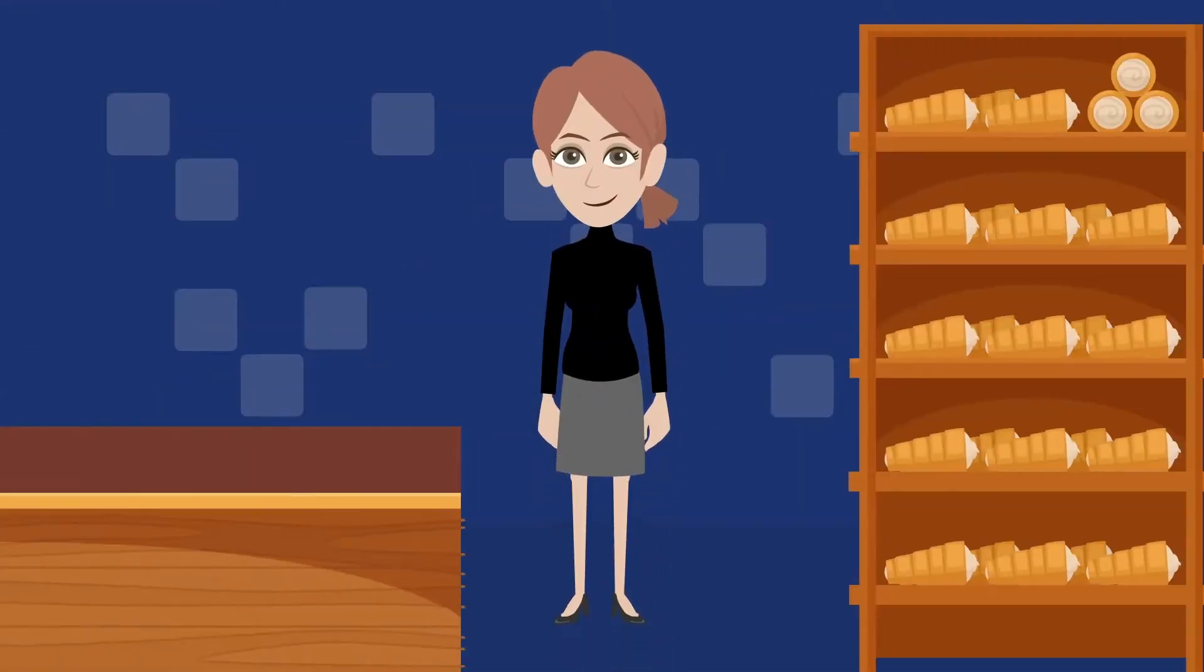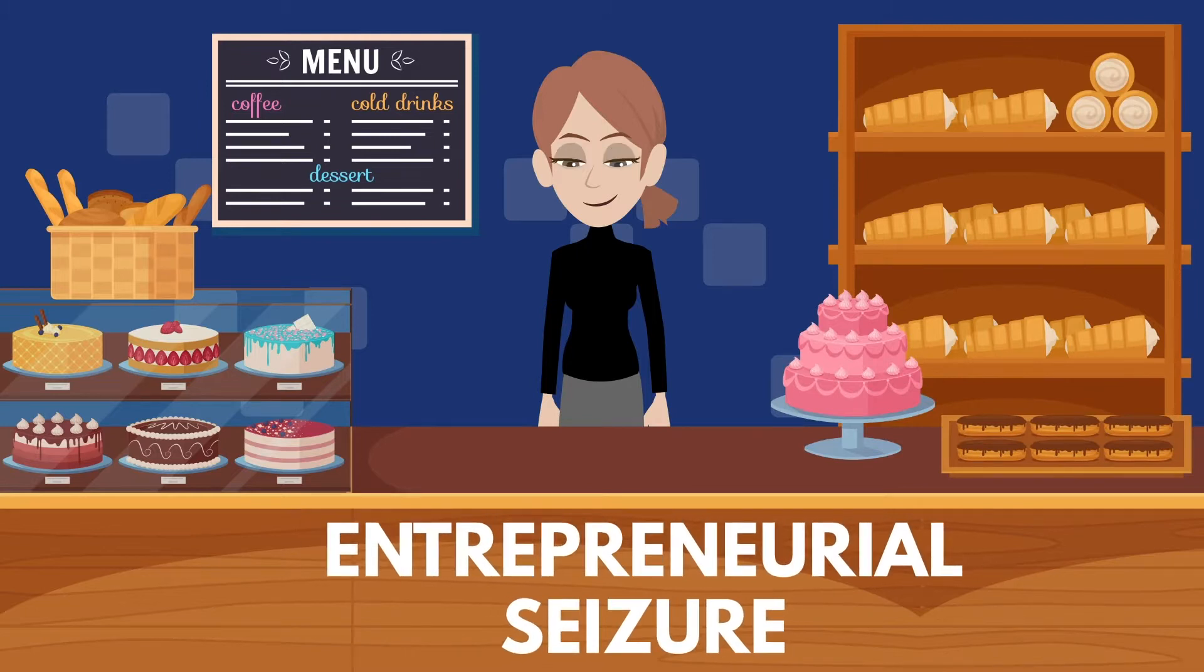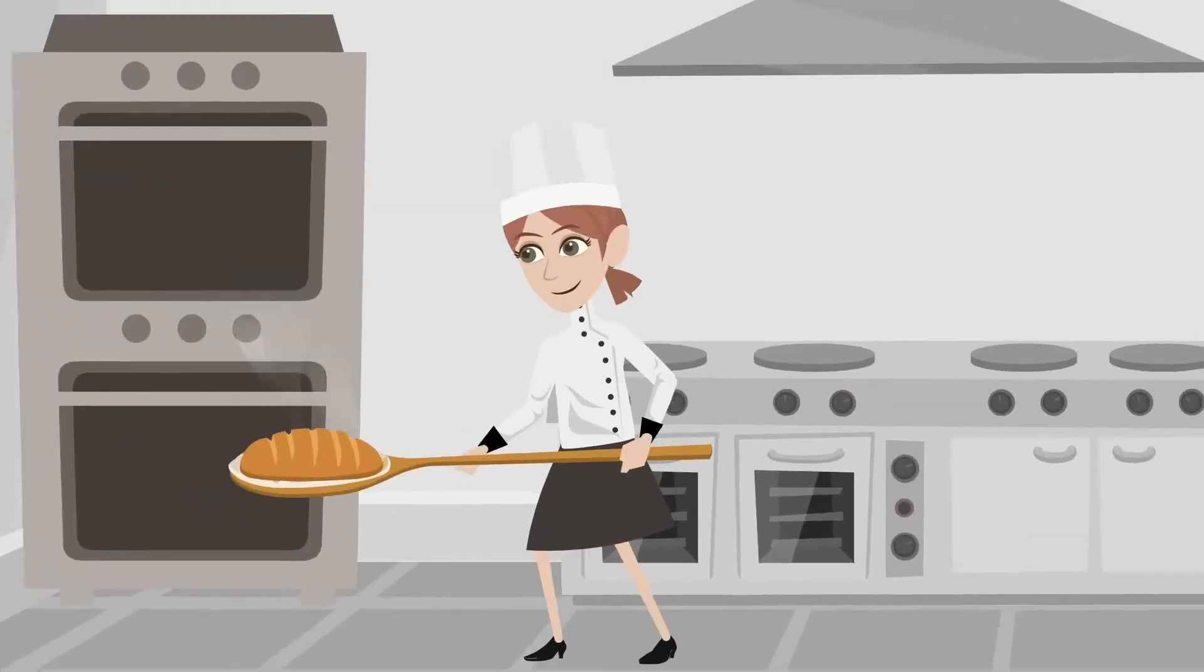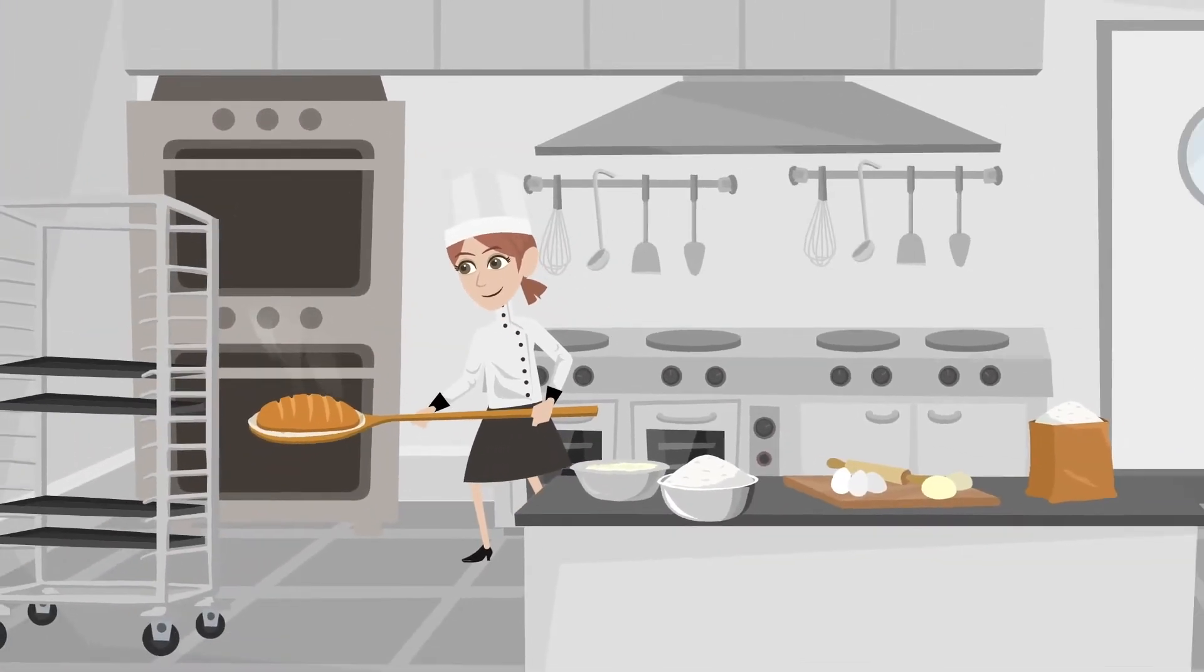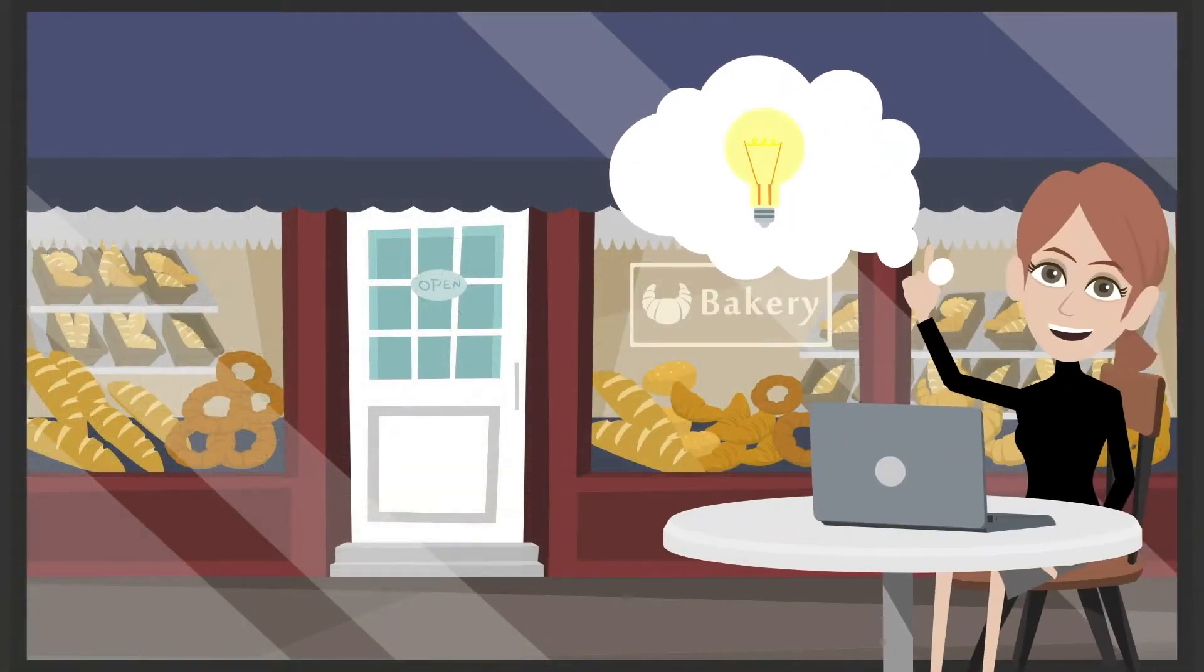First, every entrepreneur has this moment where they go into business for themselves, and Michael calls it the entrepreneurial seizure. You go from being the technician that's really good at doing the thing you do, to being a manager who oversees the work, to being the entrepreneur that has the vision for the company.